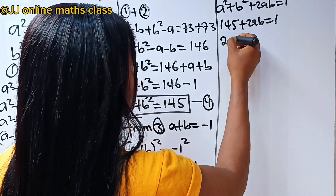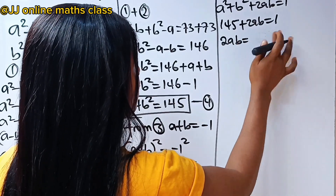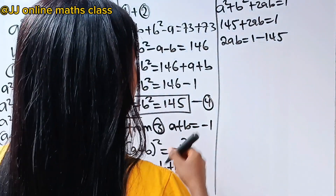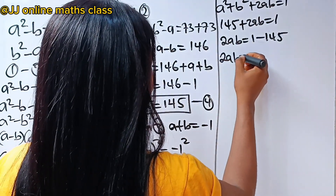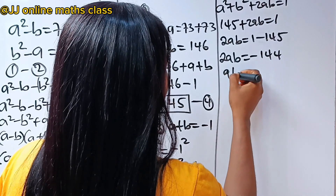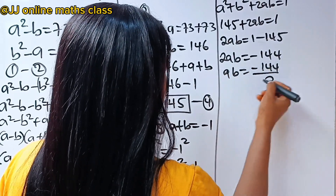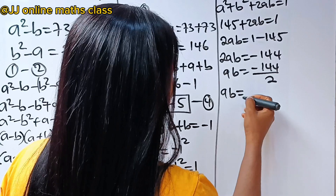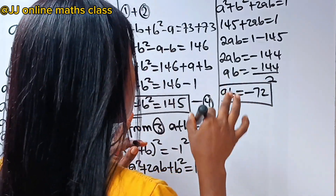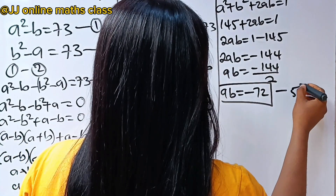We have the value for a squared plus b squared, which is 145. So 145 plus 2ab equals 1. Making 2ab the subject gives 2ab equals 1 minus 145, so 2ab equals minus 144, and therefore ab equals minus 72. Let's call this equation 5.